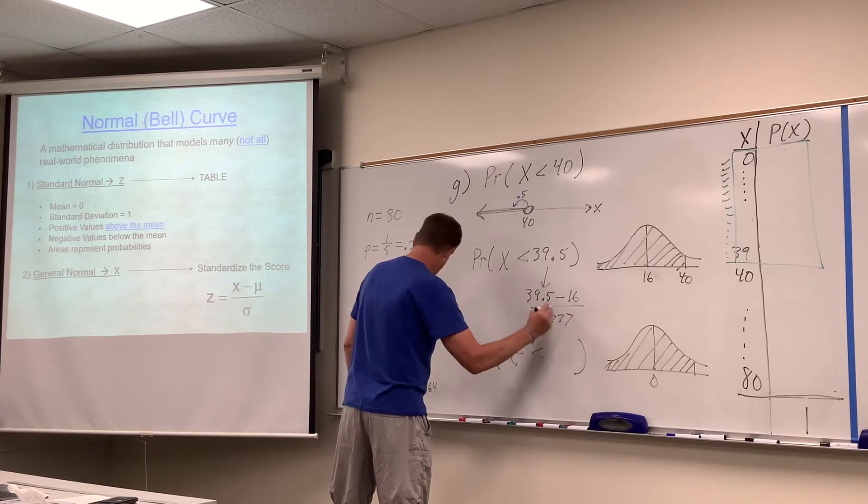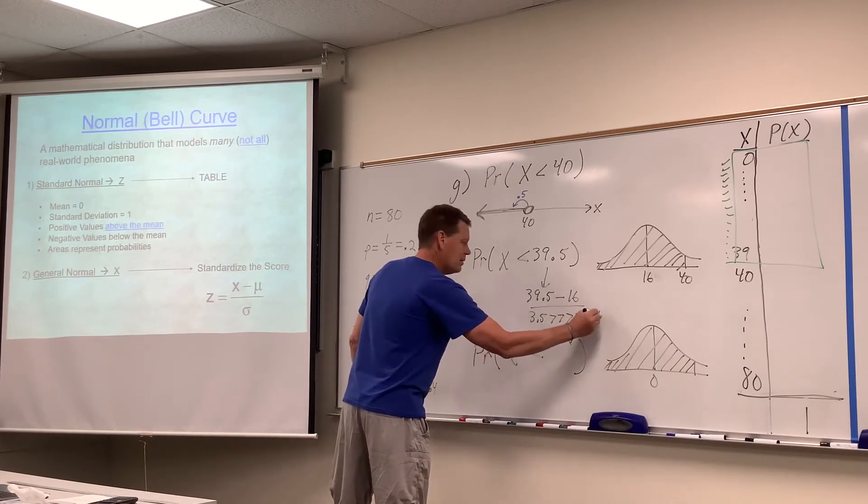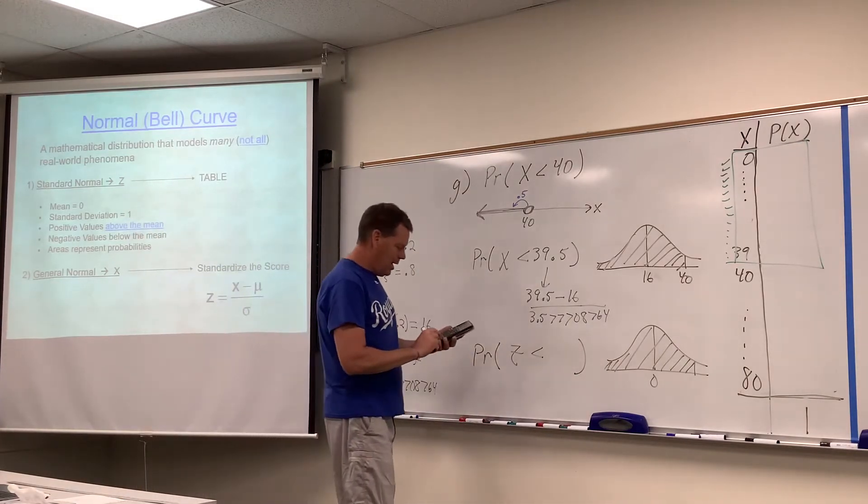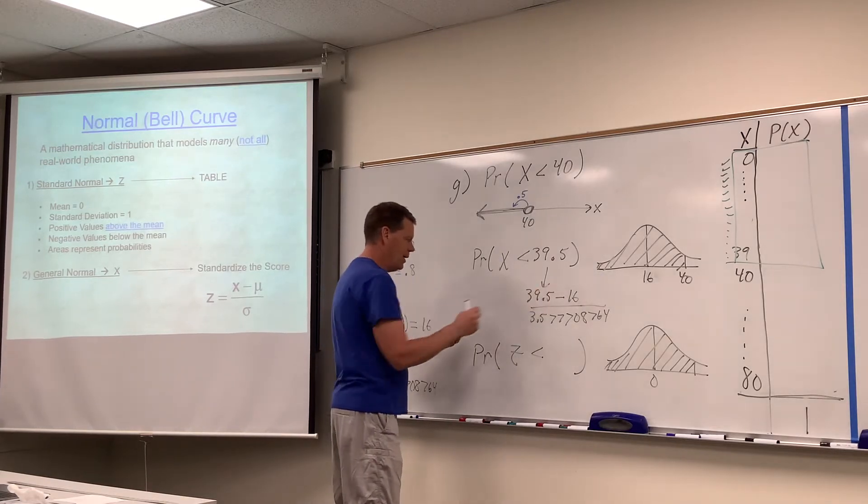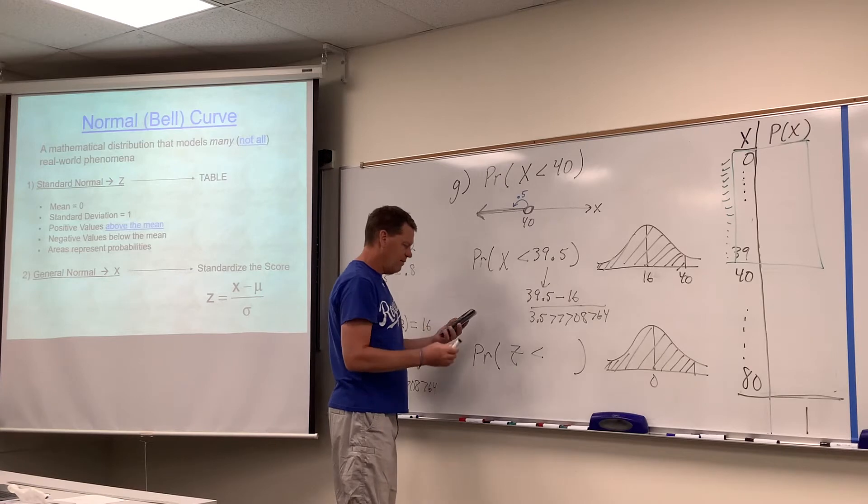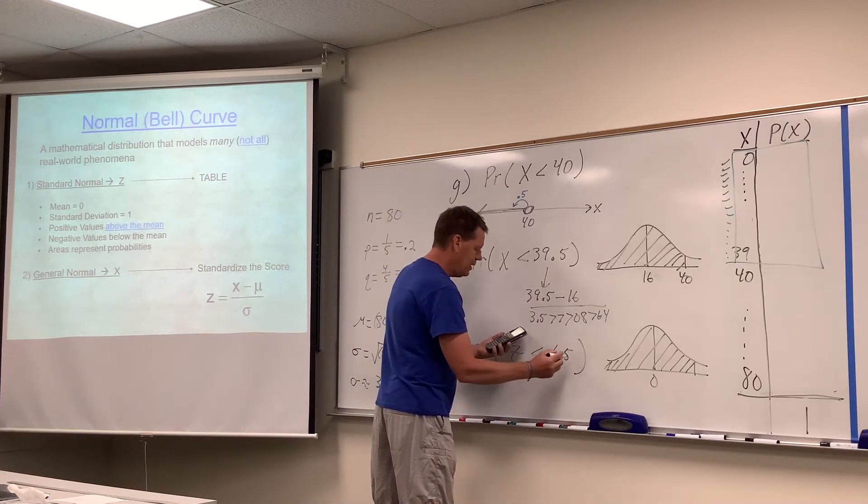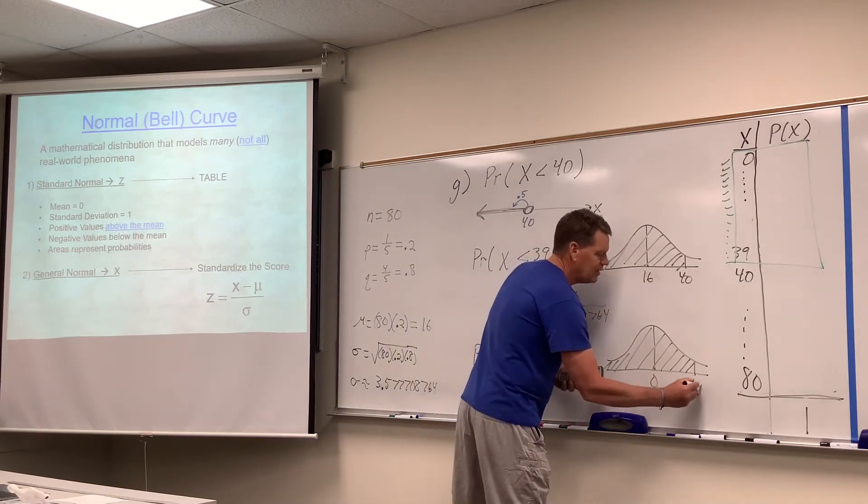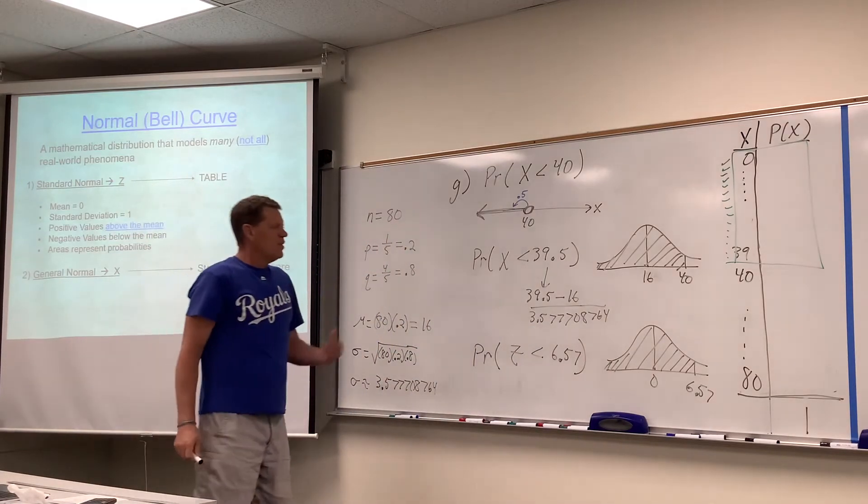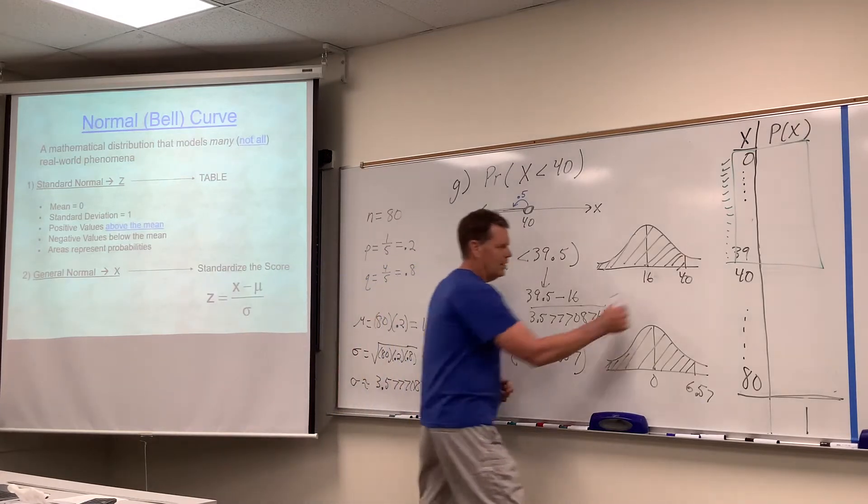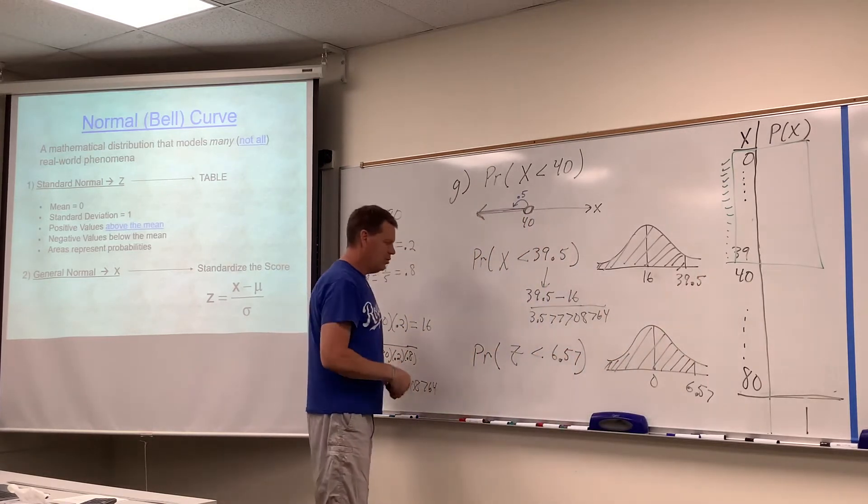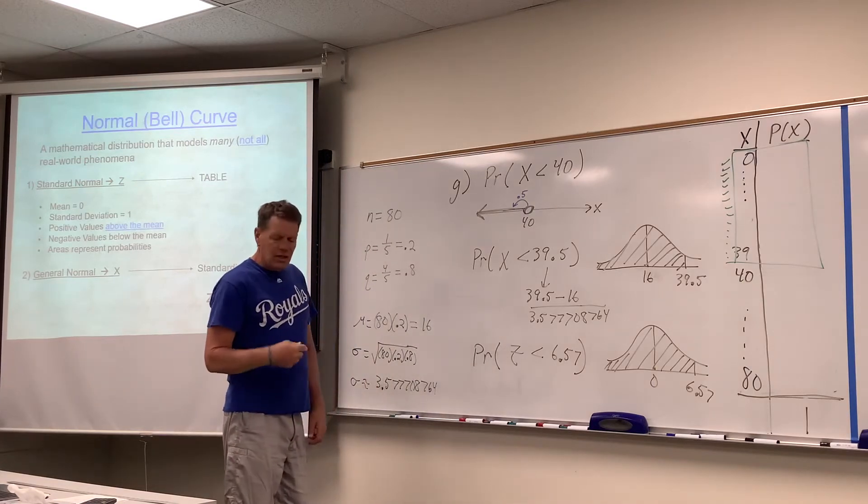39.5 minus 16 - that's a long way away. Divided by 3.577... that's 6.57. That's a lot of standard deviations. It takes a lot of standard deviations to get from 16 to 39.5.